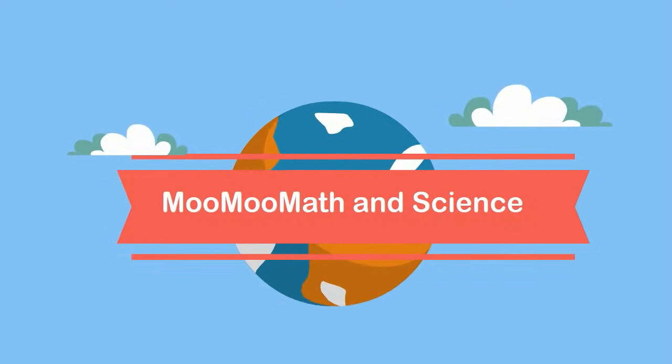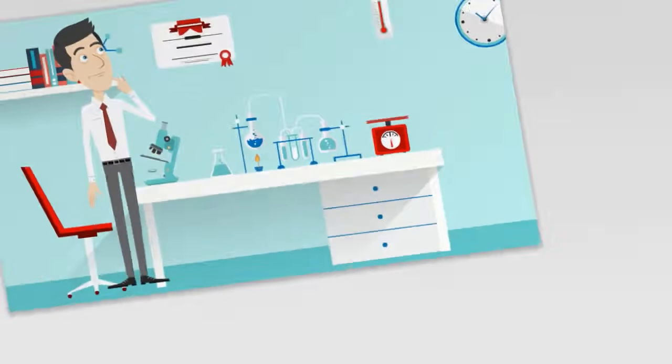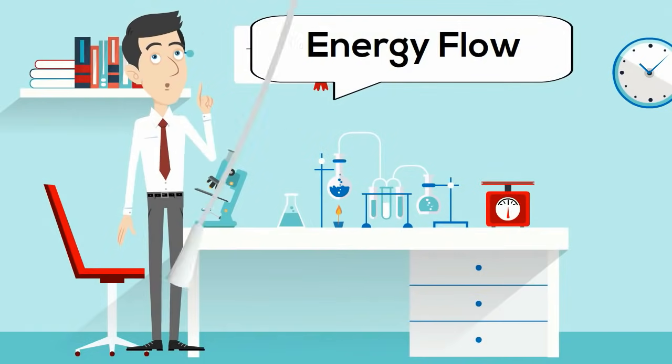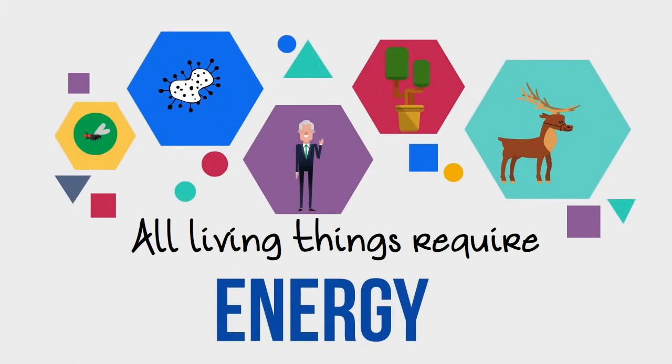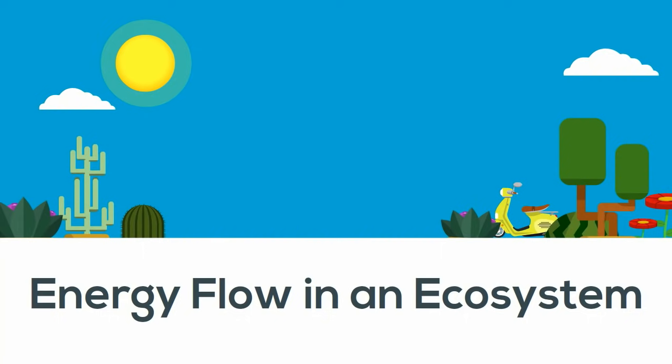Welcome to Moo Moo Math and Science. In this video I'd like to talk about energy flow in an ecosystem. All living things, which are biotic factors, require energy. Some of these biotic factors get their energy from the sun. Others eat other biotic factors.